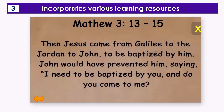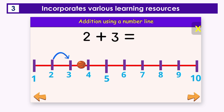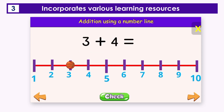Then Jesus came from Galilee to the Jordan to John. We start from two and then move three steps to the right: one, two, three. We stop at five. Therefore, two plus three equals five. Activity one — drag the ball to the correct answer on the number line.